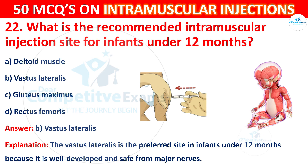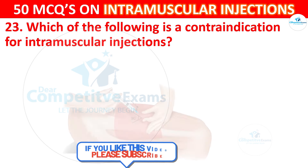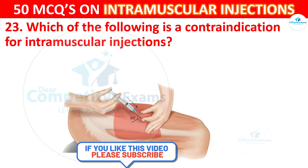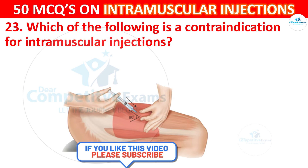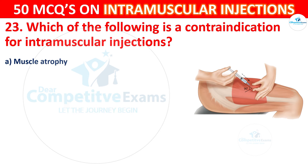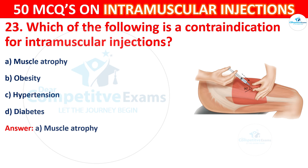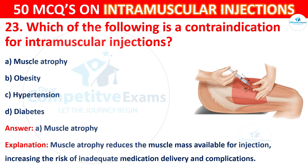Question 23: Which of the following is a contraindication for intramuscular injection? Options are: muscle atrophy, obesity, hypertension, or diabetes. The correct answer is A, muscle atrophy. Muscle atrophy reduces the muscle mass available for injection, increasing the risk of inadequate medication delivery and complications.